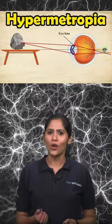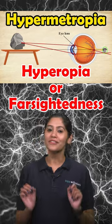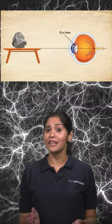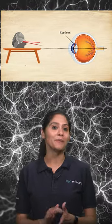Hello everyone. Let's revise hypermetropia, also called hyperopia or farsightedness. Here, objects at farther distances are visible, but there is trouble seeing nearby objects.